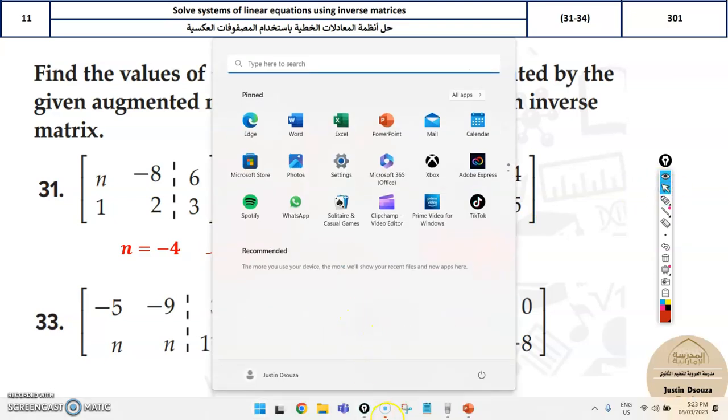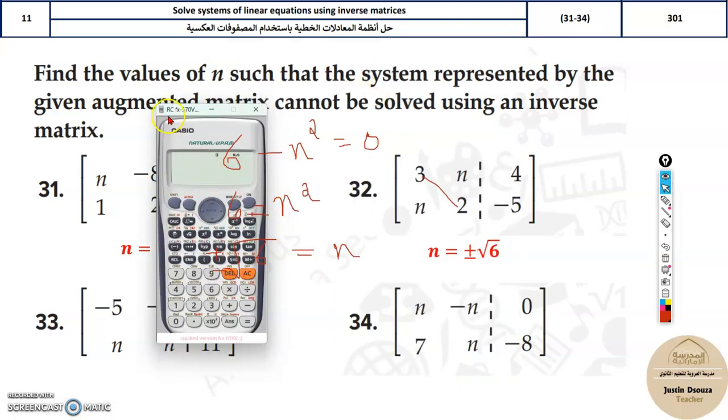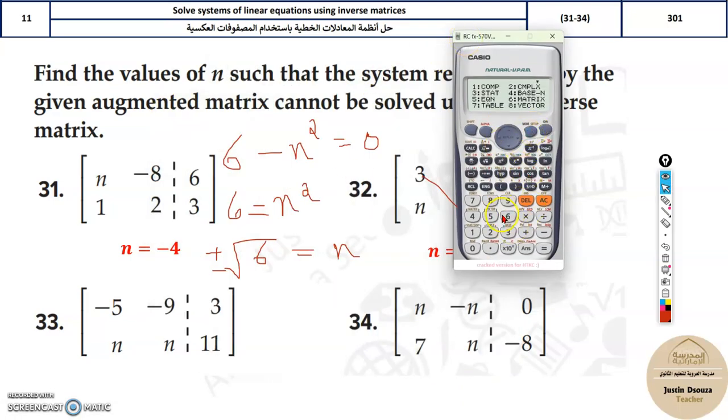Or you can use the calculator. It'll be mode 3 for quadratic equations. What is the coefficient of x squared? Mode 3. It should be x squared first, then x, then the constant.